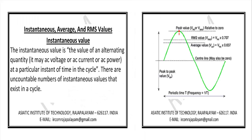Terms used in AC: The instantaneous value is the value of an alternating quantity — it may be AC voltage, AC current, or AC power — at a particular instant of time in the cycle. There are uncountable numbers of instantaneous values that exist in a cycle.